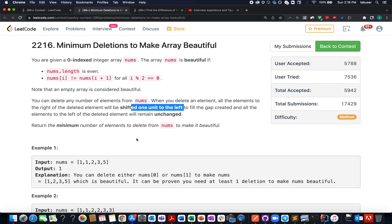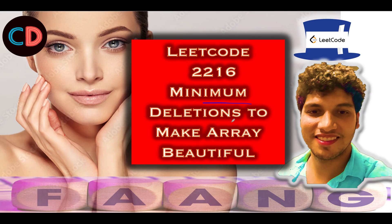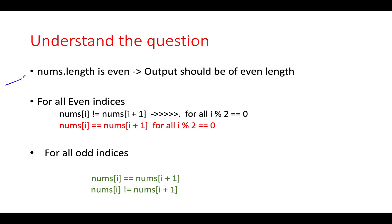Let's get started with the presentation. This is LeetCode 2216, a medium-level question. The problem lies in understanding the question appropriately and taking hints from it. The first and foremost point: the output should have an even length of elements. If it has an odd length, you have to delete one more element. Note this — I will talk about it later during the iteration process.